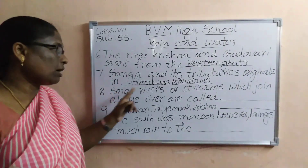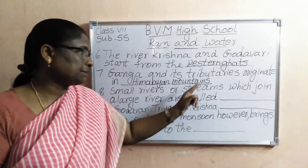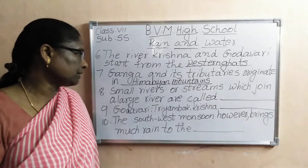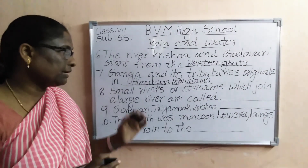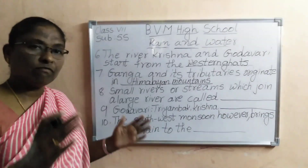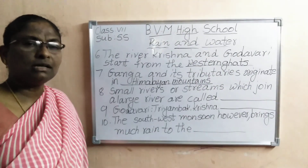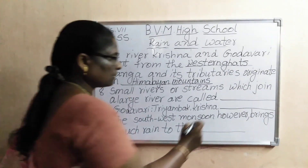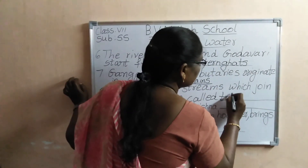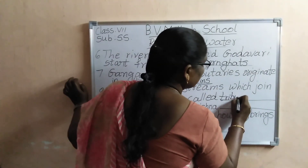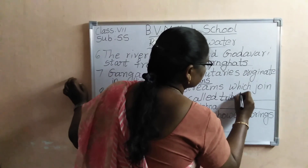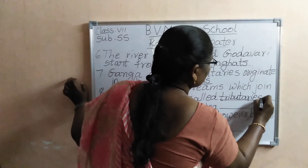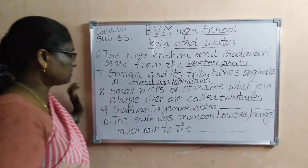Eighth one: small rivers and streams which join a large river are called dash. Small rivers and streams — they join one big river — that is called tributaries.